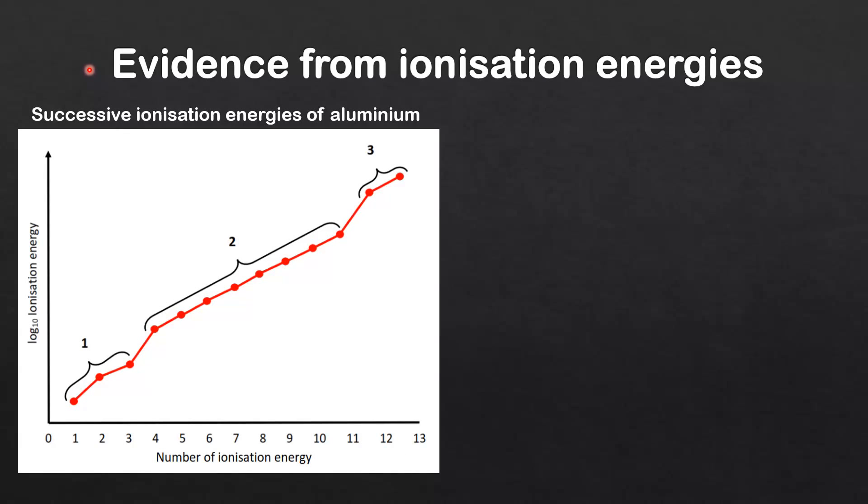Next we look at evidence from ionization energies. We have a graph of successive ionization energies of aluminium, showing the ionization energy to remove the first 12 electrons. We can roughly separate these electrons into three bands.